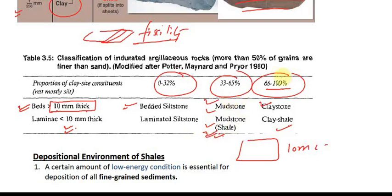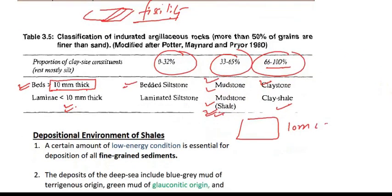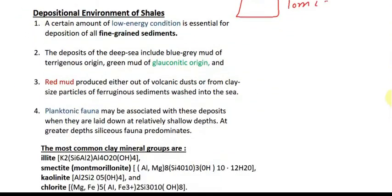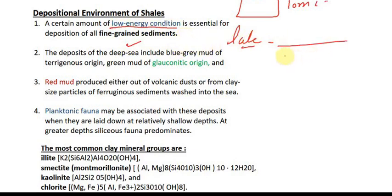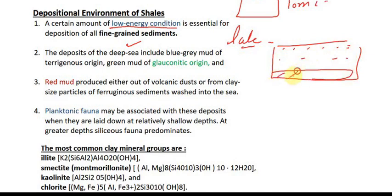Shale is generally split into sheets. Talking about depositional environment of shale: low-energy conditions are ideal for shale deposition, such as a lake environment where energy is very low. Fine-grained sediments easily settle under low-energy conditions. If energy is high, fine-grained sediments are easily transported rather than deposited. But if energy is low, fine-grained sediments settle and form shale or mudstone.